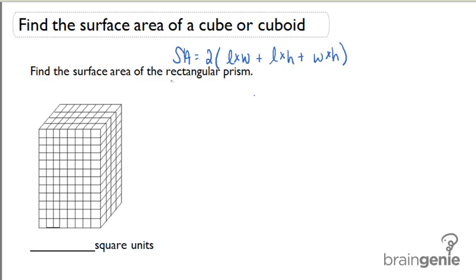Let's use this formula to find the surface area of the below rectangular prism. Remember, a rectangular prism is the same thing as a cuboid. So in this rectangular prism, the dimensions are not given to us explicitly. We have to count the cubic units in order to find the dimensions of this rectangular prism.